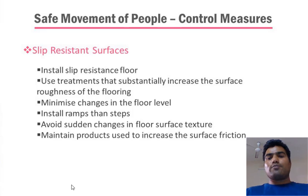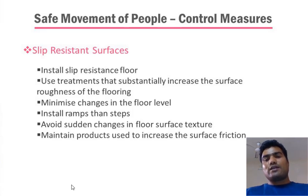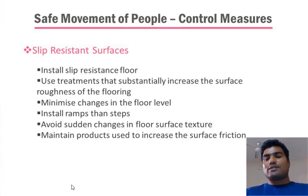Control measures for safe movement include slip-resistant surfaces. If the surface is slip resistant, the chance of slipping is much less. Install slip-resistant flooring, use treatments that substantially increase the surface roughness of the floor, minimize changes in floor level, install ramps instead of steps, avoid sudden changes in floor surface texture, and maintain products used to increase surface friction.